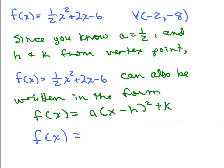Lastly, if we look at this function and we know the vertex point, since we know a and the vertex point, you can take the function and write it in this other form of a quadratic function, a parabola, by just plugging in the values of a, h, and k. Remember, h is -2, so it's plus 2 squared and then minus 8.